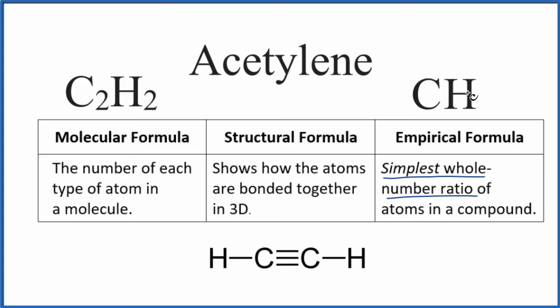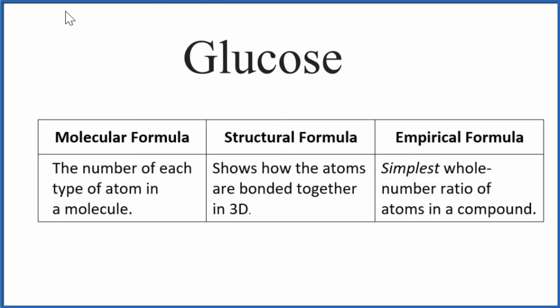Let's try another one, glucose. For glucose, the molecular formula that shows us the number of each type of atom is C6H12O6.